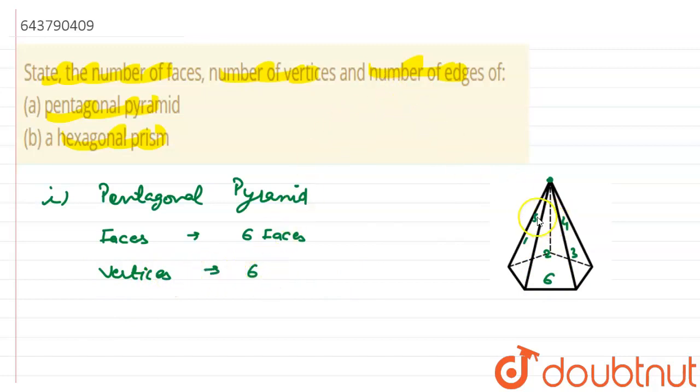Now we have to find out the number of edges. How many number of edges? How many lines are there which are joining the vertices of this pyramid? One, this is one, two, three, four, five, six, seven, eight, nine, ten.